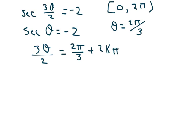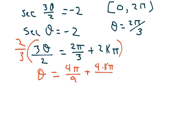Okay. First of all, we have to solve for theta. And we multiply this by 2 thirds. So we get theta equals 4 pi over 9 plus 4 times k pi over 3.